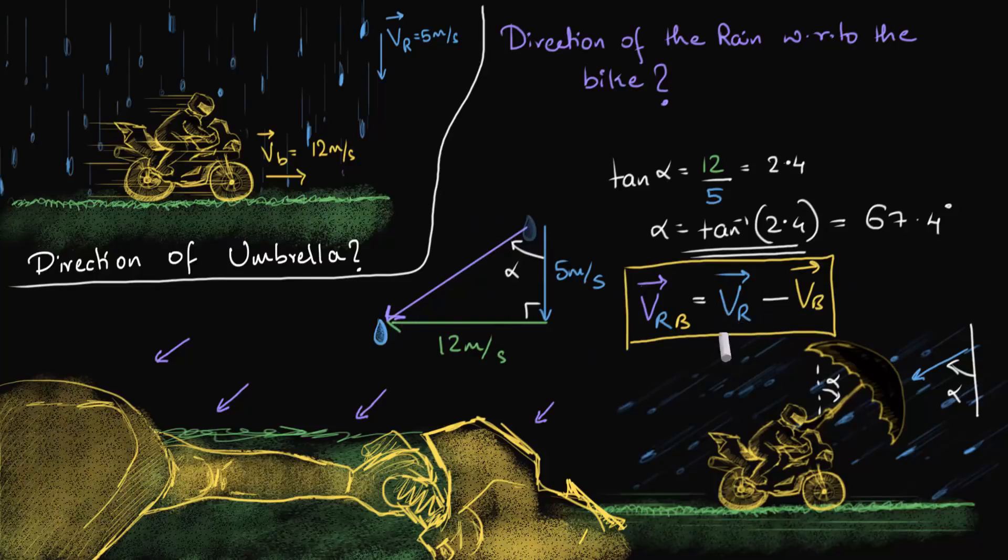We are adding Vr. So over here, there is Vr. And negative of Vb. Well, Vb is 12 meters per second forward. So negative of that would be 12 meters per second backward. So when you add this, you get this vector. So we get the same result.